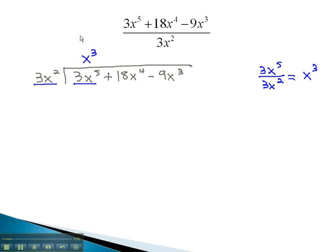Next, we multiply this x cubed by the divisor to get 3x to the 5th. Our third step is to change the sign on that 3x to the 5th and combine to get 0.